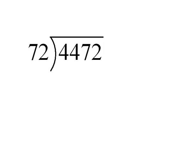Let's try another example and see what happens here. Here we're taking 4,472 divided by 72. As we start working through this, we have to start with our divisor and trying to figure out digit by digit where we have to start.